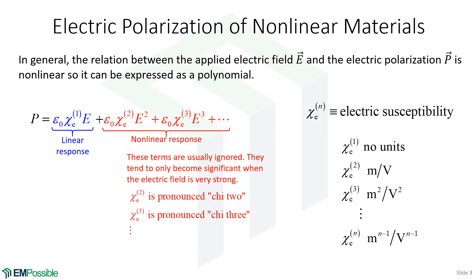All materials are nonlinear — it's just that in some materials the χ2, χ3, χ4 parameters are large enough that we can experience nonlinear material properties at lower electric field values. But all materials will eventually become nonlinear, although many of them will break down at about the same time they're becoming nonlinear, so that's not always useful.